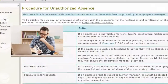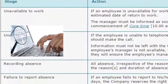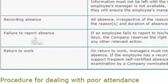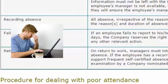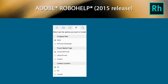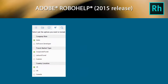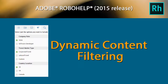Cutting through the clutter to find the right content can be daunting, especially when you're looking through large, complex knowledge bases, policies and procedures, and online help systems. The 2015 release of Adobe RoboHelp has an innovative solution: Dynamic Content Filtering.